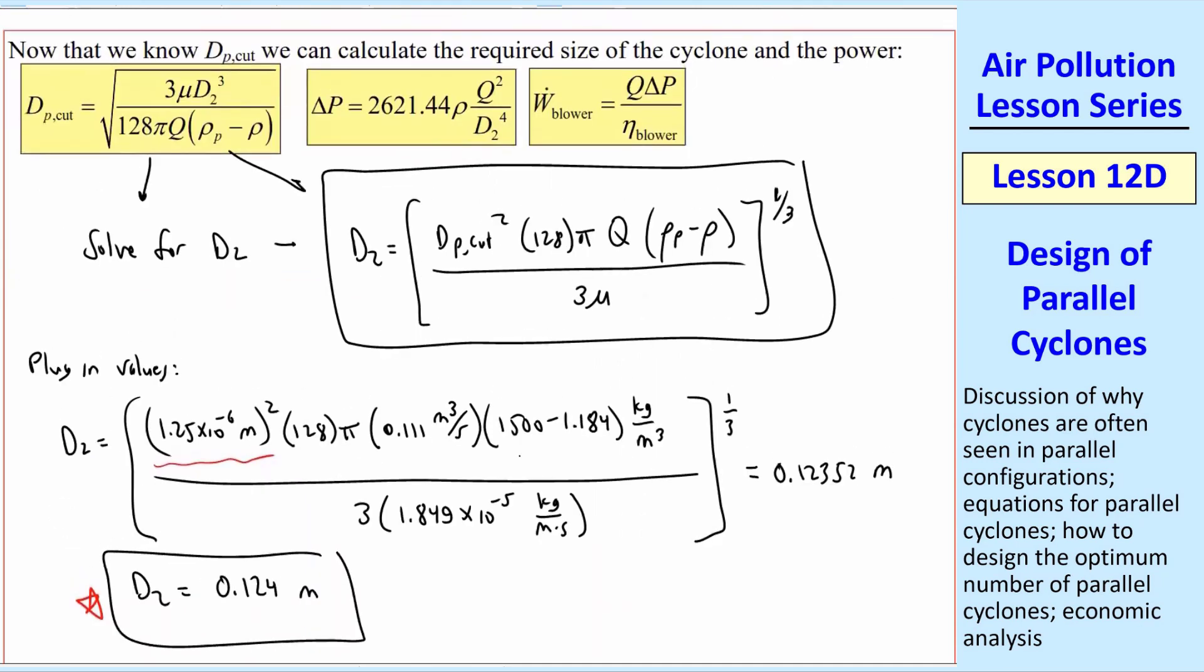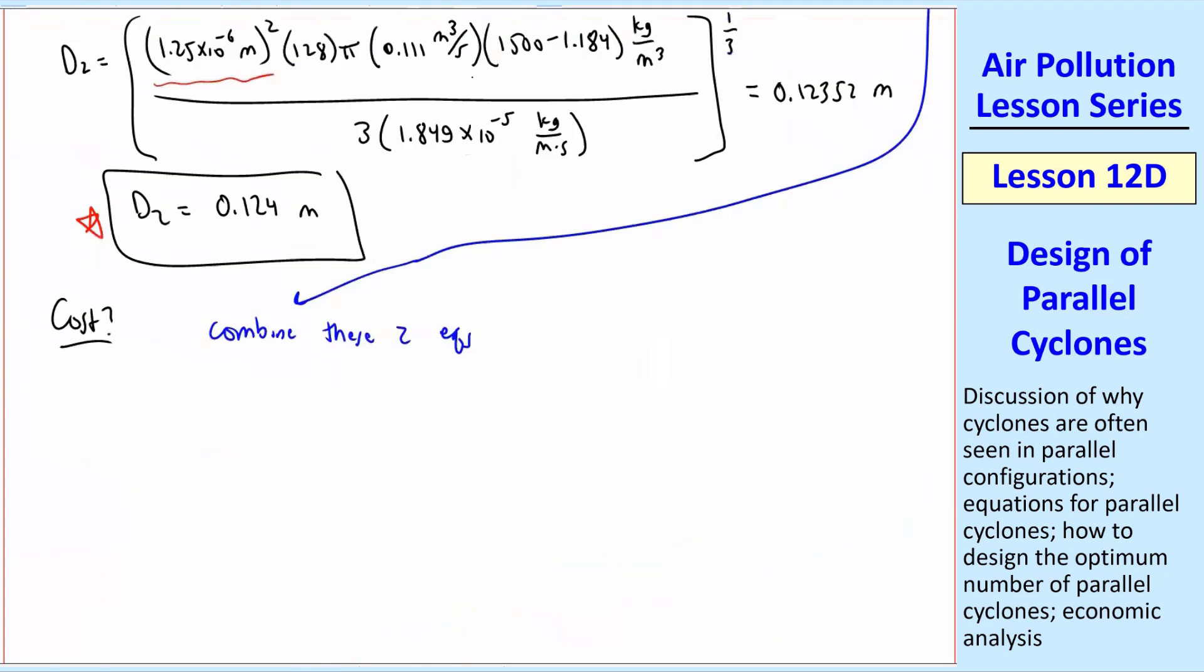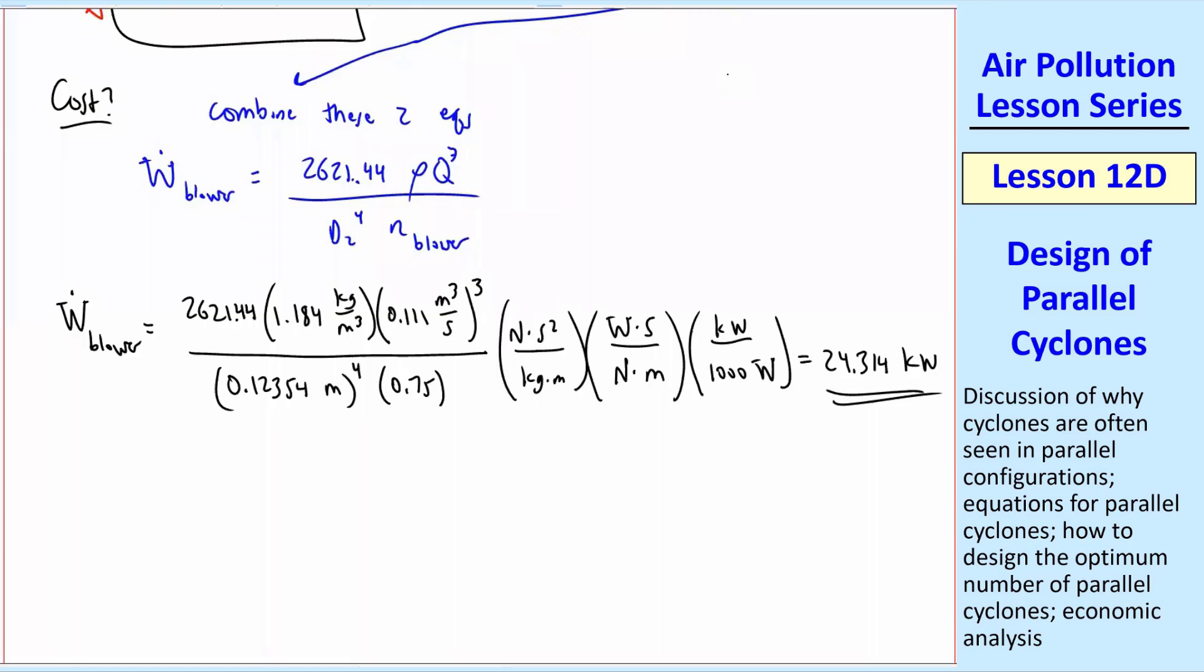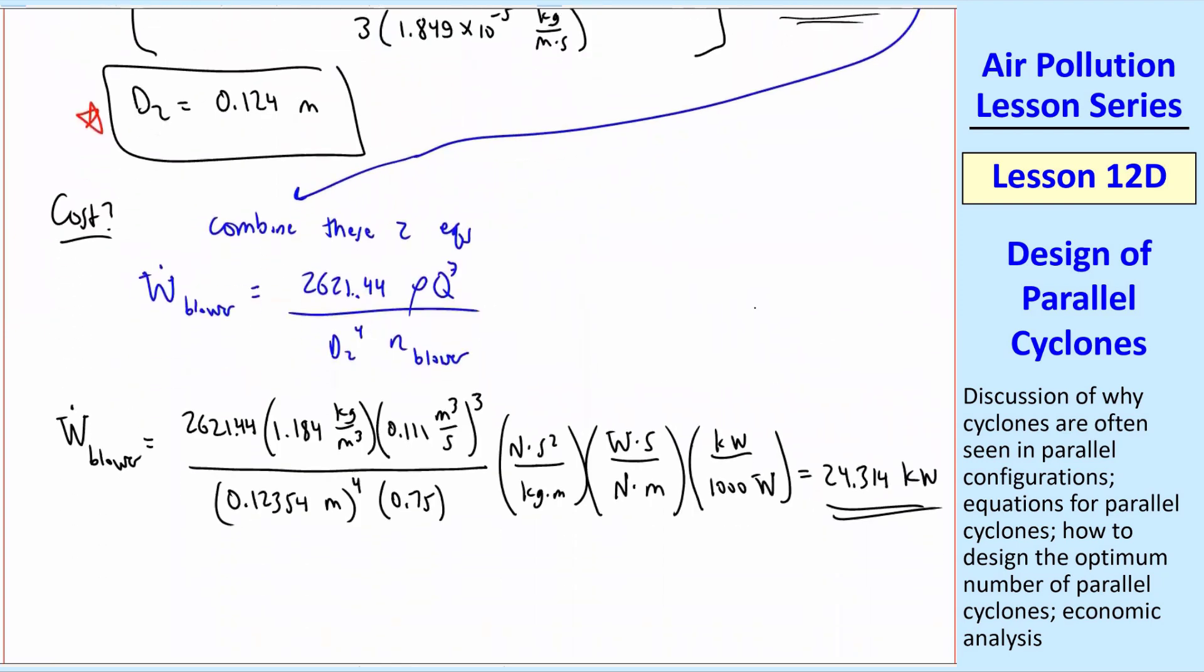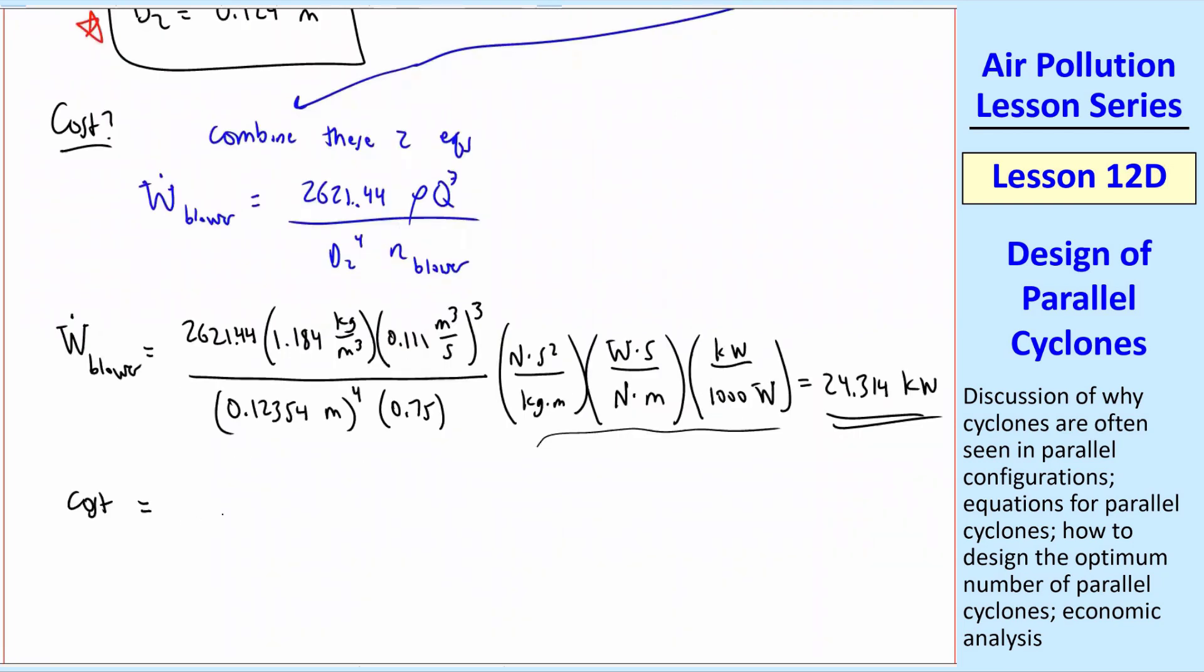What about the cost? Well, let's go back to these two equations. I'm going to put a blue circle around all of these and bring it down here. We need to combine these two equations to get one equation for W dot. So the power, W dot blower, is equal to 2621.44 times rho Q cubed over D2 to the fourth times eta of the blower. And let's plug in the numbers here also. Again, being careful with units. For example, I had to make sure I put in all the digits of this, and I put in the units for all the variables, and I end up with 24.3 kilowatts. And you have to do several unit conversion factors to make this all work out.